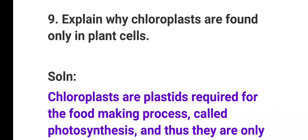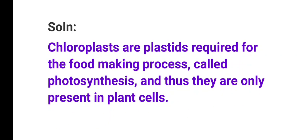Question number 9: Explain why chloroplasts are found only in plant cells. Chloroplasts are plastids required for the food-making process called photosynthesis. Since animals do not perform photosynthesis, chloroplasts are only present in plant cells.